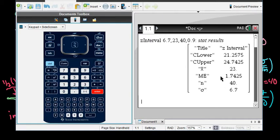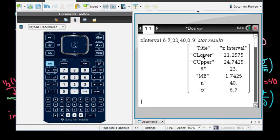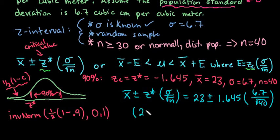And when we bring this up, it does tell us our margin of error is 1.7425. So that's within 1.7 cubic centimeters per cubic meter of the actual mean or of X bar. So this is what's being added and subtracted to get your lower limit and your upper limit.